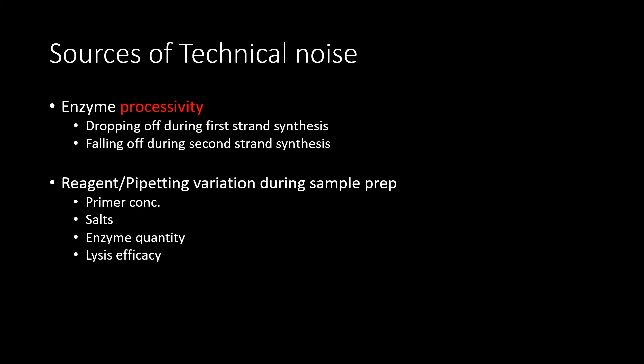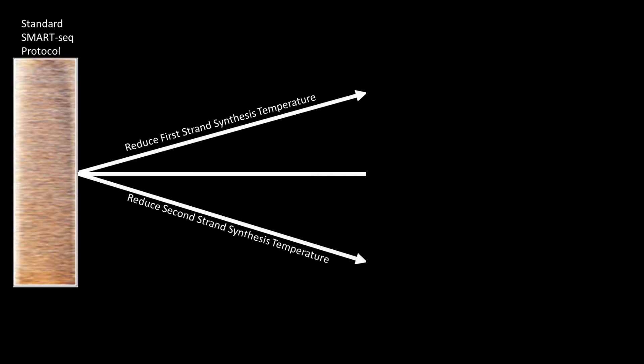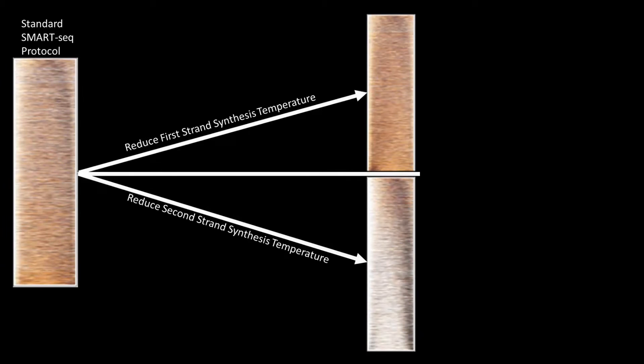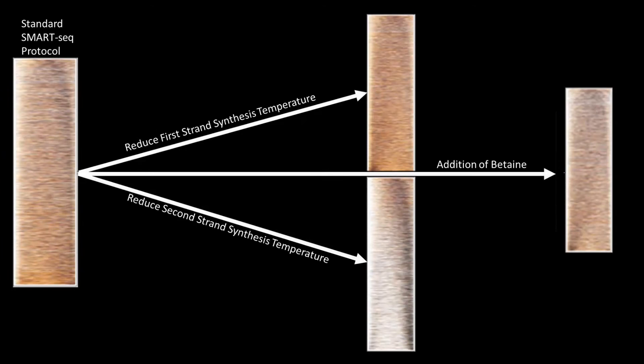Other sources of technical noise include reagent and pipette variation during sample prep, which can affect primer, salt, and enzyme quantity in reactions, as well as lysis efficacy when setting up plates that we sort into with FACS. Enzymes also have their own inherent biological bias, often seen as bias for or against GC content. Looking at differences we were able to get from the SmartSeq protocol, by reducing the first and second strand synthesis temperatures we can see a shift in the bias. Newer versions like SmartSeq 2, with the addition of betaine, can shift the bias further and even start to produce 5' bias in some cases.